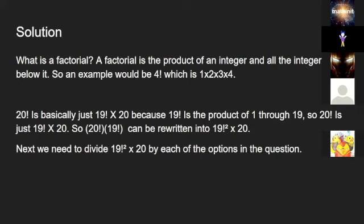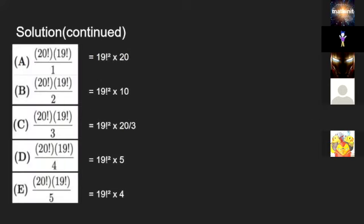We need to divide 19 factorial squared times 20 by each option. A: divided by 1 equals 19 factorial squared times 20. B: divided by 2 equals 19 factorial squared times 10. C: divided by 3 equals 19 factorial squared times 20 divided by 3. D: divided by 4 equals 19 factorial squared times 5. E: divided by 5 equals 19 factorial squared times 4.